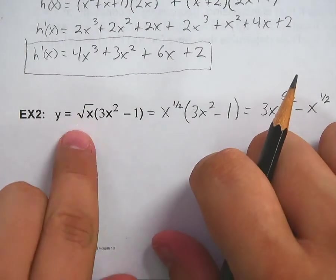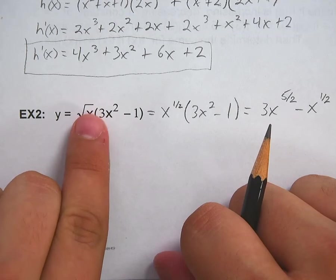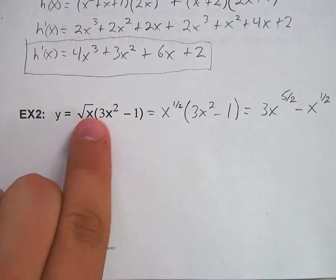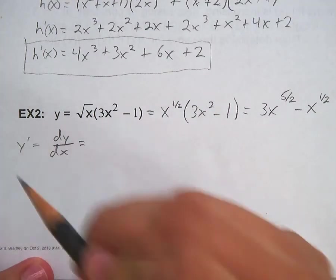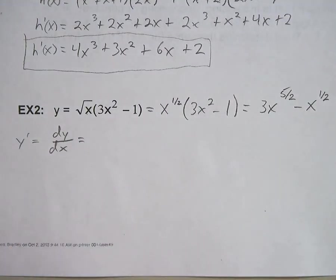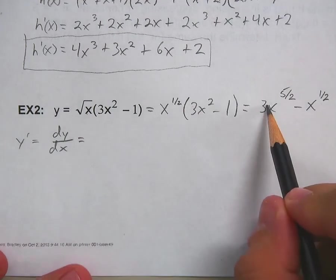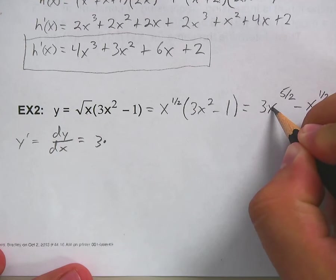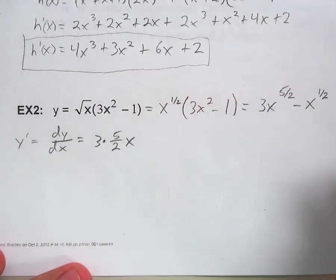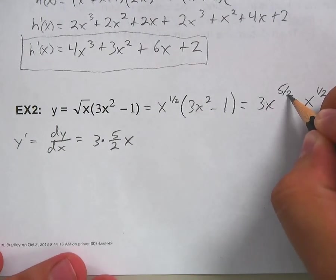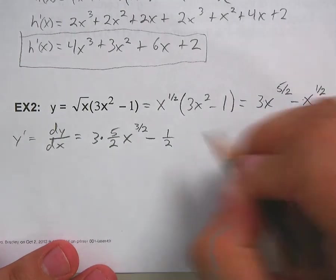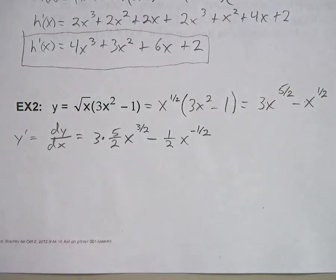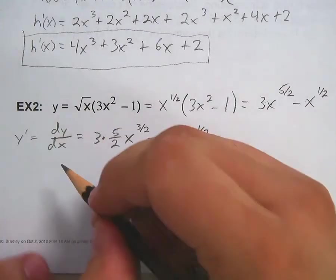It's much easier to take the derivative of that result using the power rule. My general rule: if there's only one term, multiply through and use the power rule — there are exceptions, of course. Also note that y′ and dy/dx mean the same thing — dy/dx is just the more formal notation for the derivative with respect to x. Now taking the derivative: dy/dx = 3 · (5/2) · x^(3/2) − (1/2) · x^(−1/2).